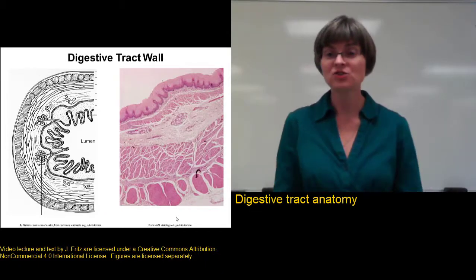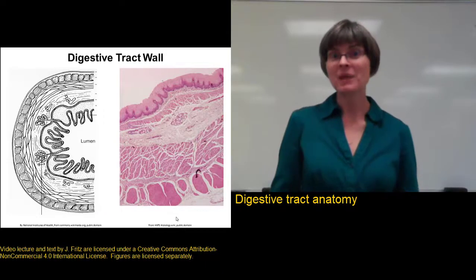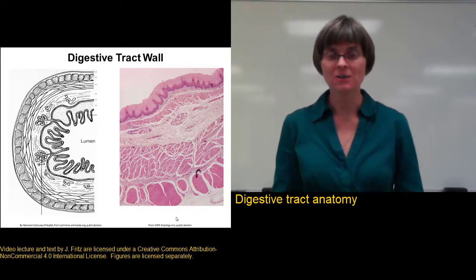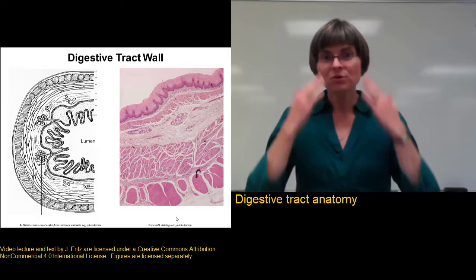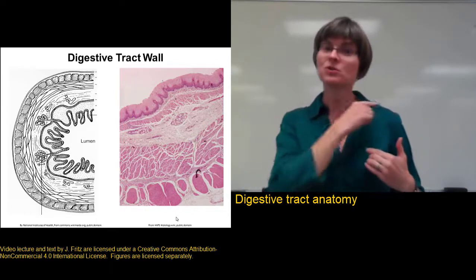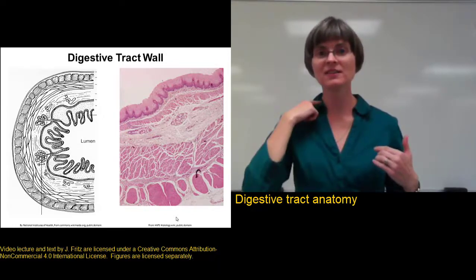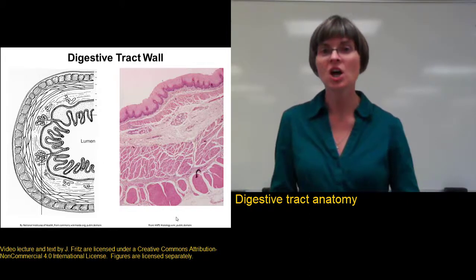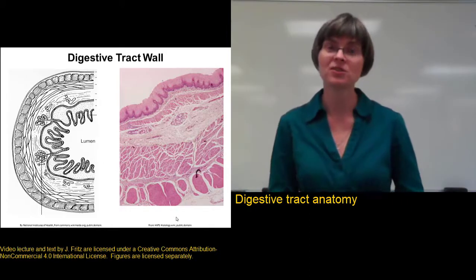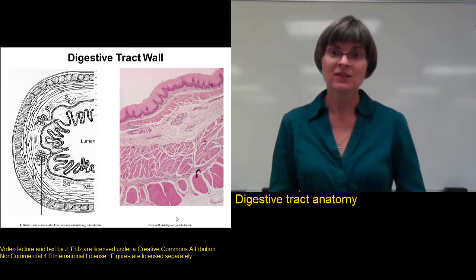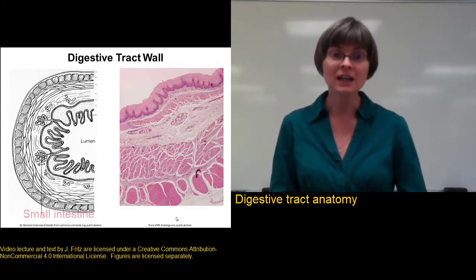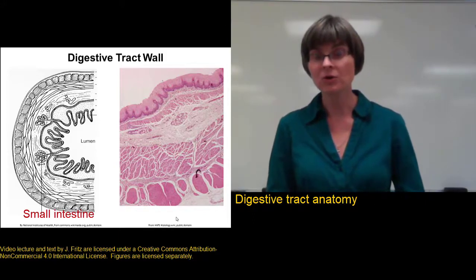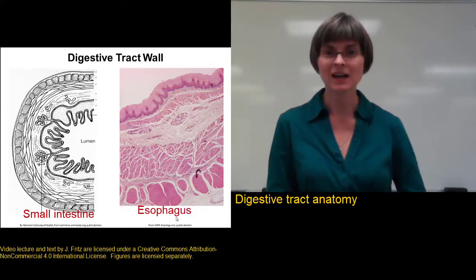Let's take a look at the structure of the digestive tract wall. I'm going to make another one of my fabulous drawings, so you're welcome to draw along as well. If we were to go through the digestive tract at any point and do a cross section — like cutting across the esophagus or across the small intestine or across the large intestine — we would see the same layers to the digestive tract wall. This particular drawing is of the small intestine, while the microscope photographed next to it is from the esophagus.